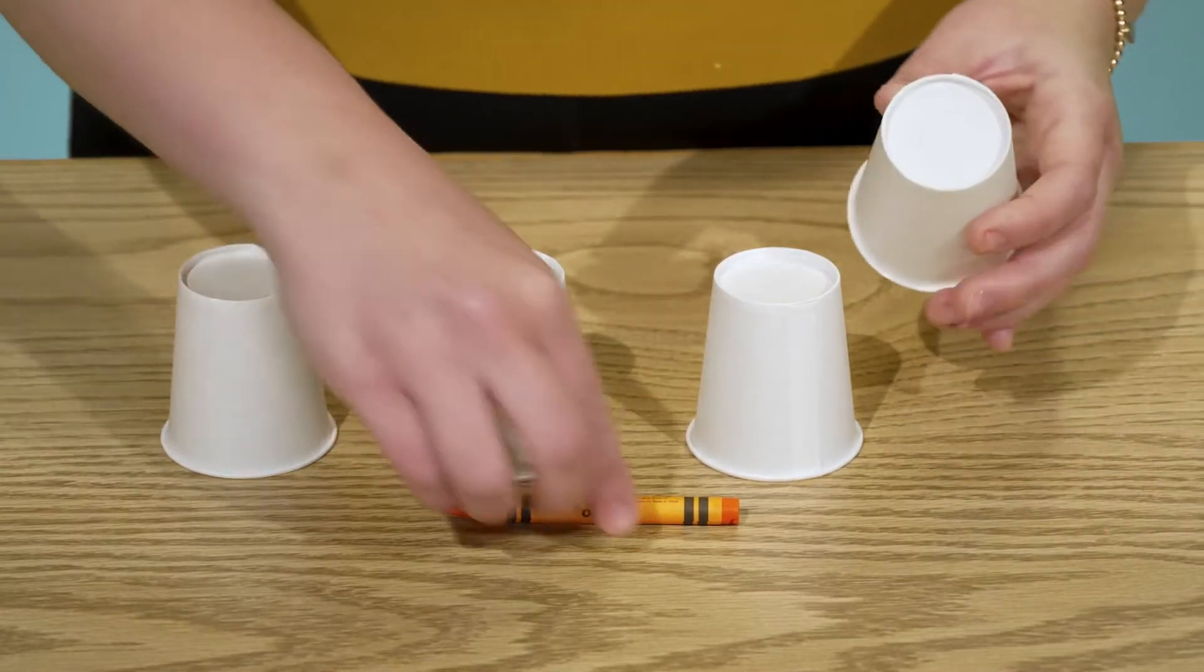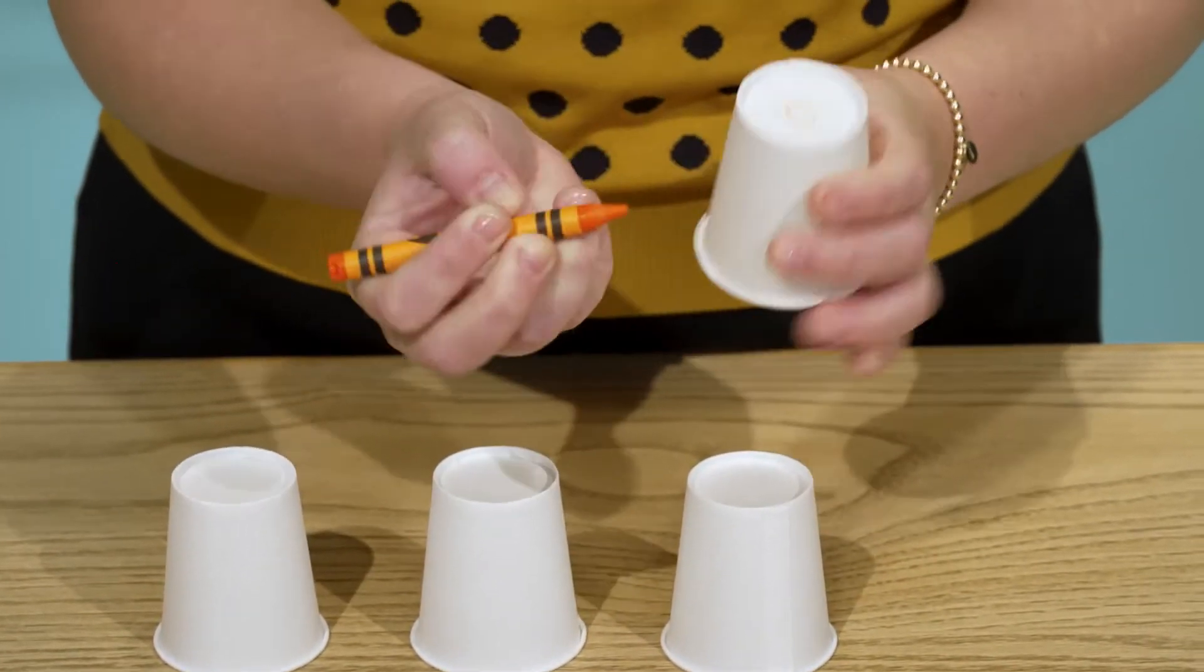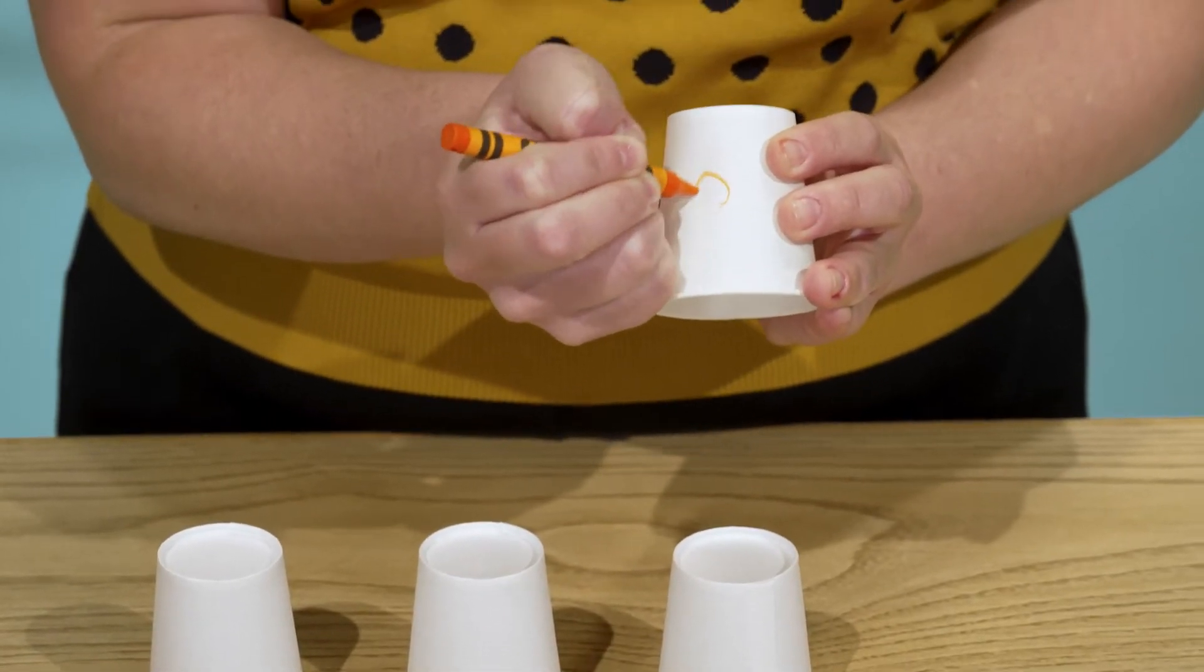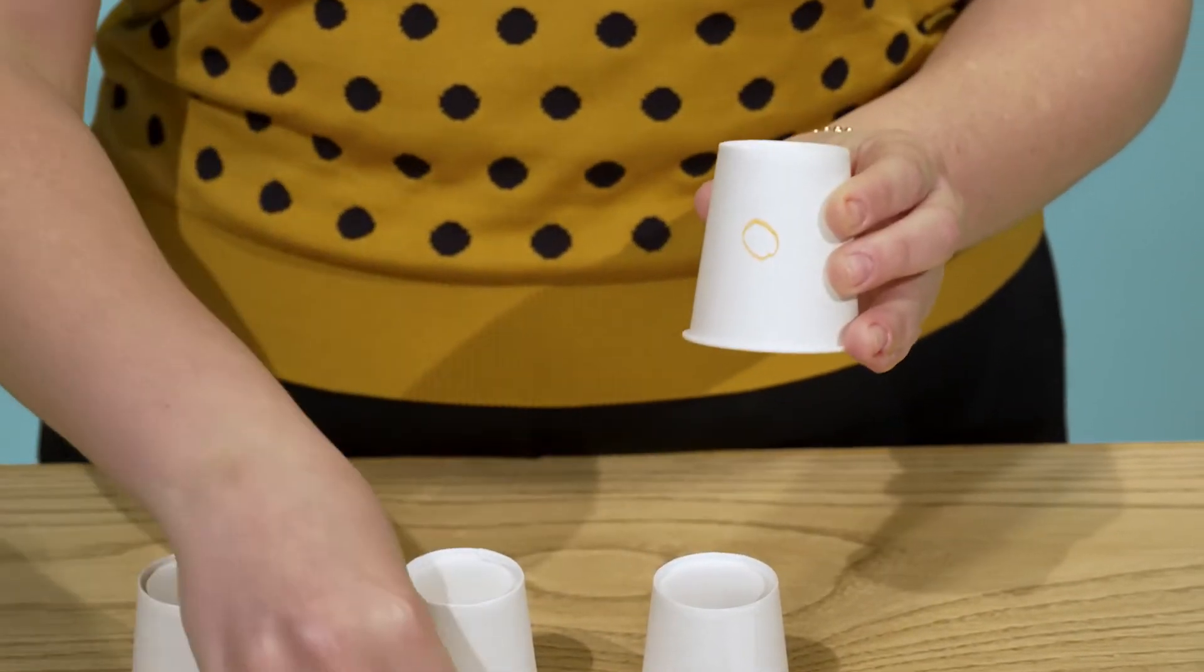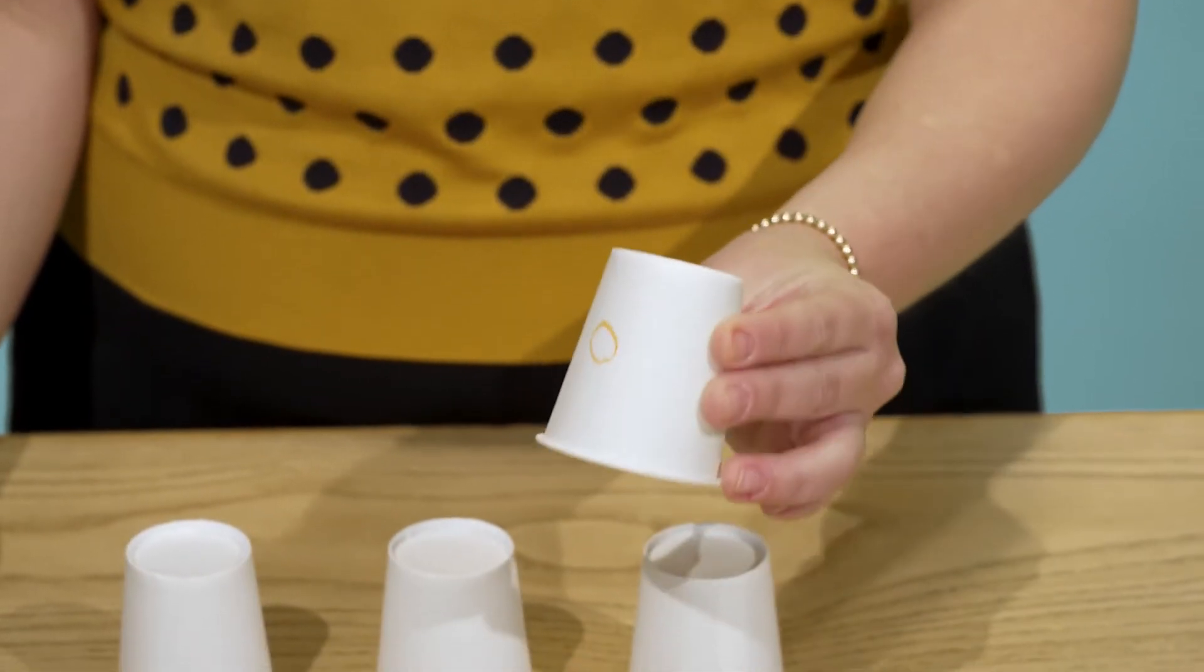Choose one of them and use your crayon to draw a picture or pattern. A simple circle is fine, but feel free to be as artistic as you'd like. Draw on the side or bottom of the cup so you can easily tell it apart from the other three cups.